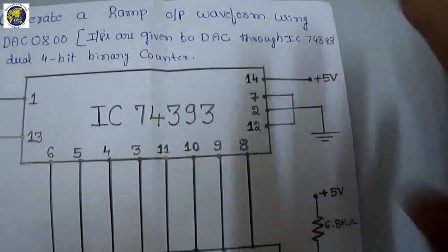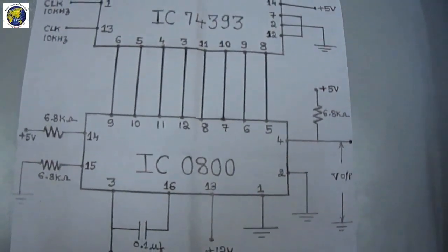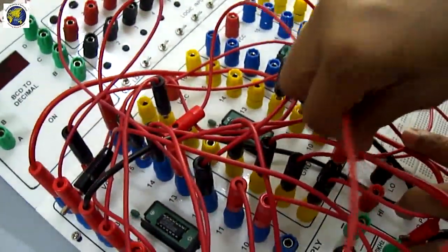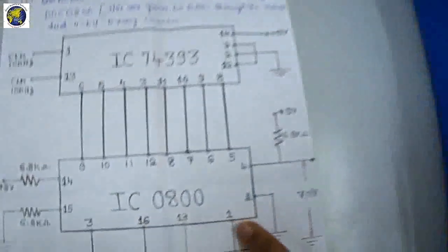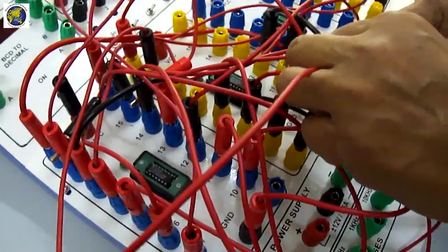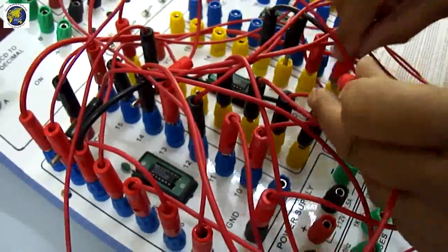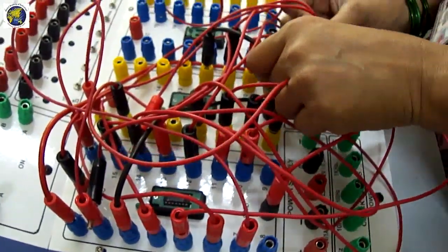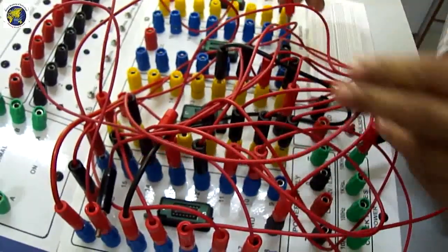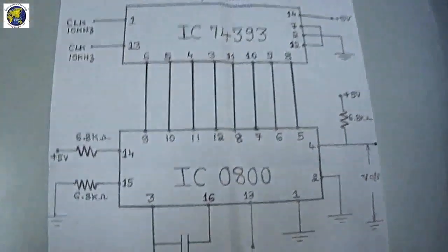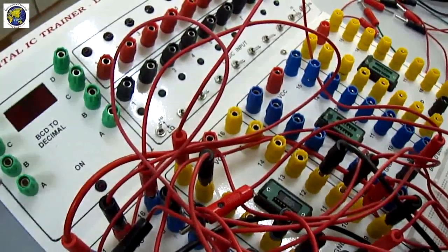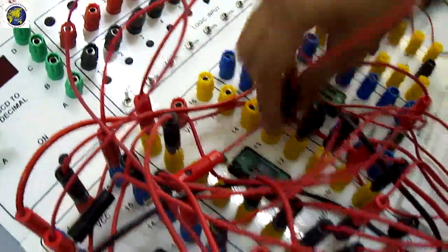DAC pin number 2 is connected to ground. DAC pin number 1 is connected to ground. Next, DAC pin number 13 is connected to plus 12 volts. Here, the plus 12 volts terminal and minus 12 volts terminal are identified on the power supply.